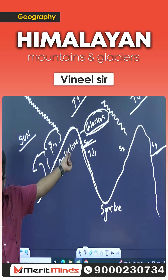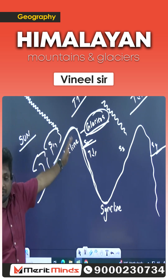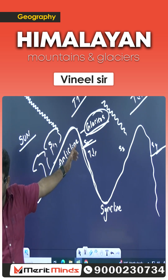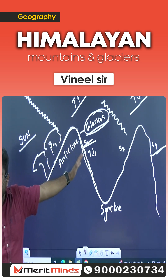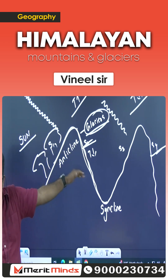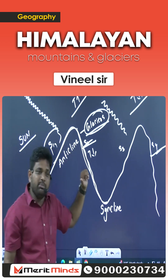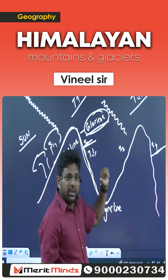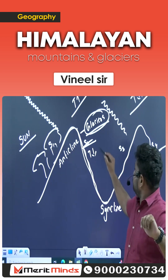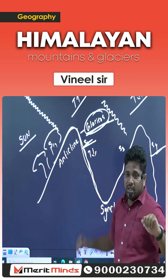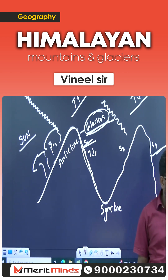Why glaciers? Because of less sunlight falling on that side. Whenever there is less sunlight, what type of temperatures do you get? Low temperatures. And whenever there are low temperatures, glaciers are formed.